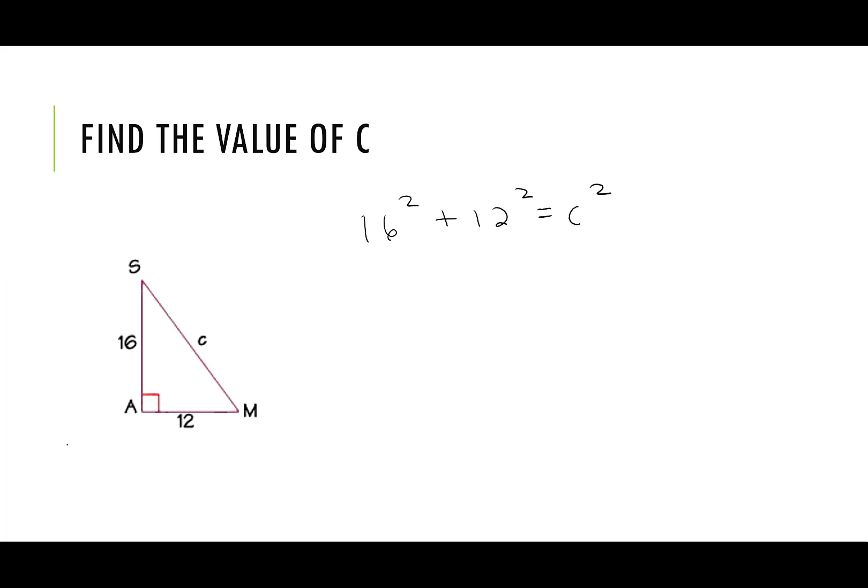So let's write that in. We had 400 for our sum. That was C squared. We took the square root, and we got 20 for our C, and again, we notice it's bigger than 16. It's also bigger than 12.